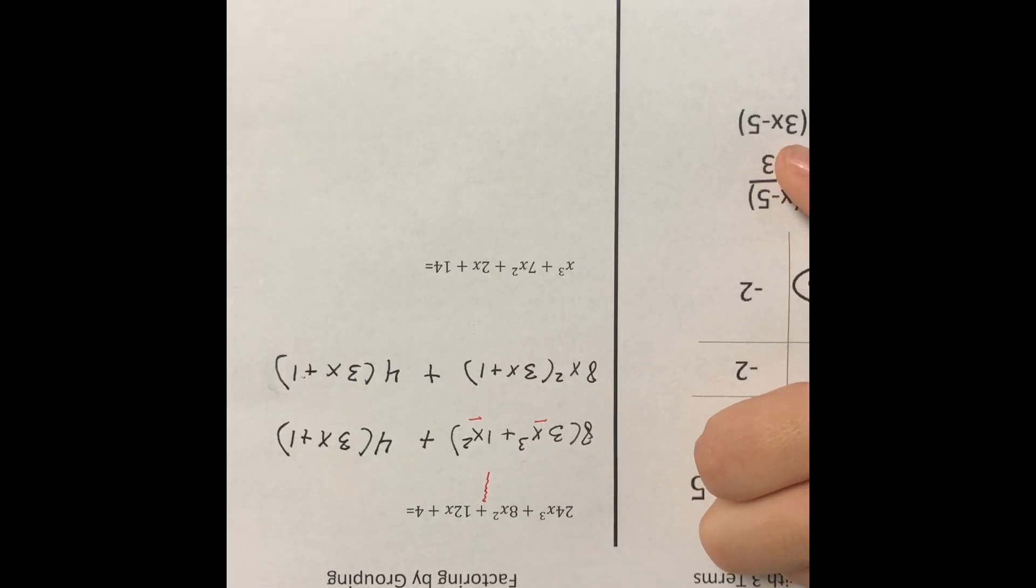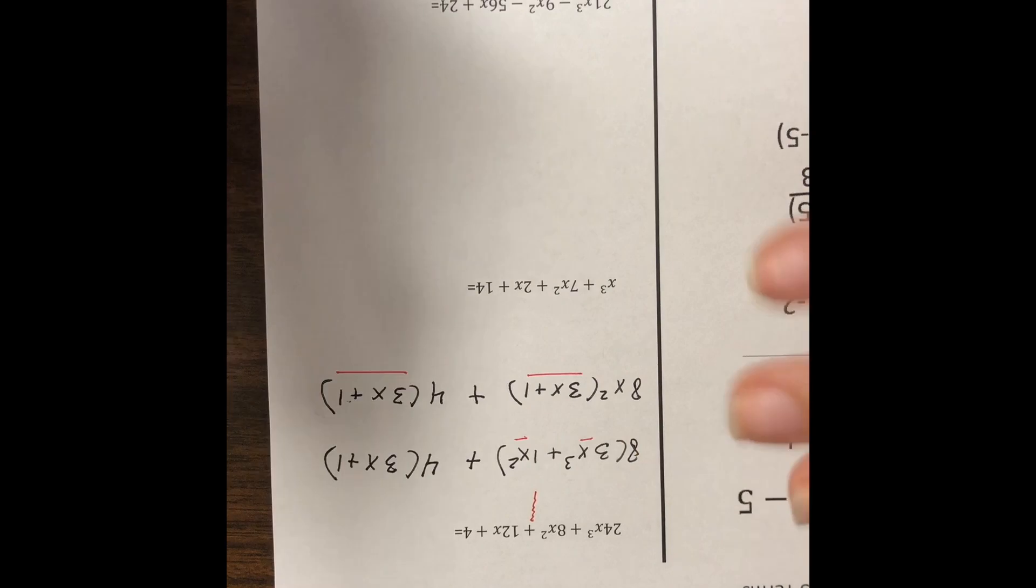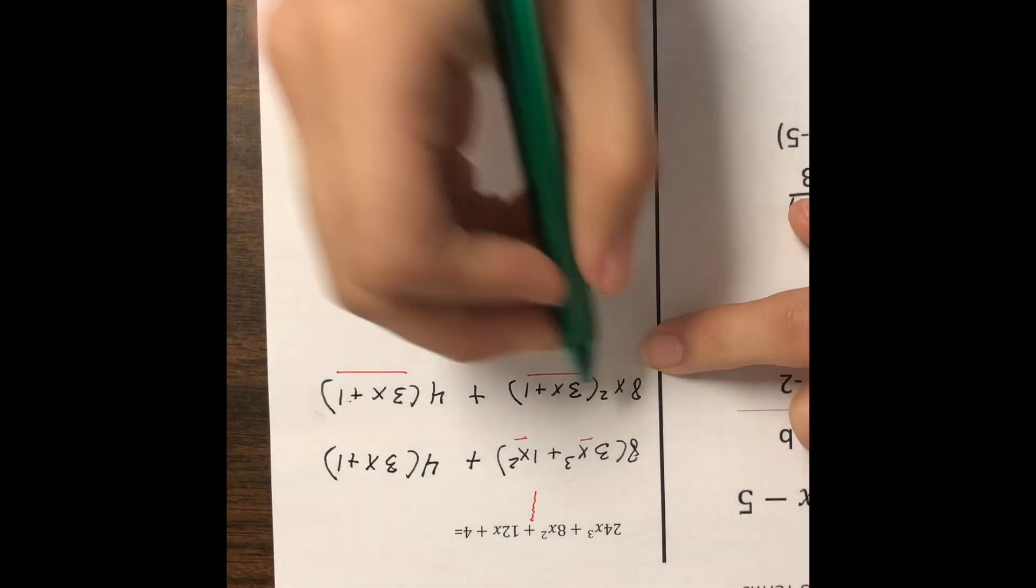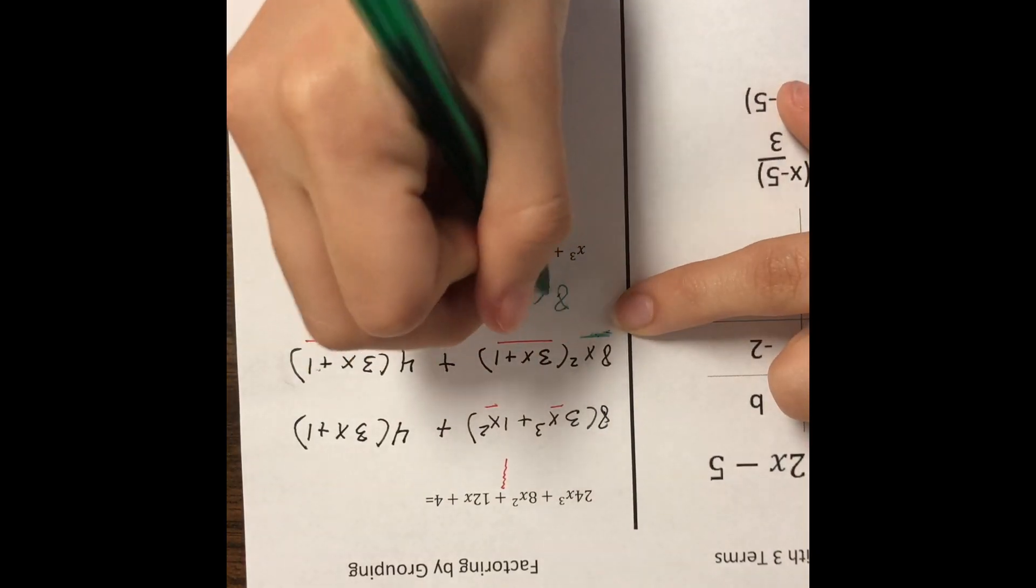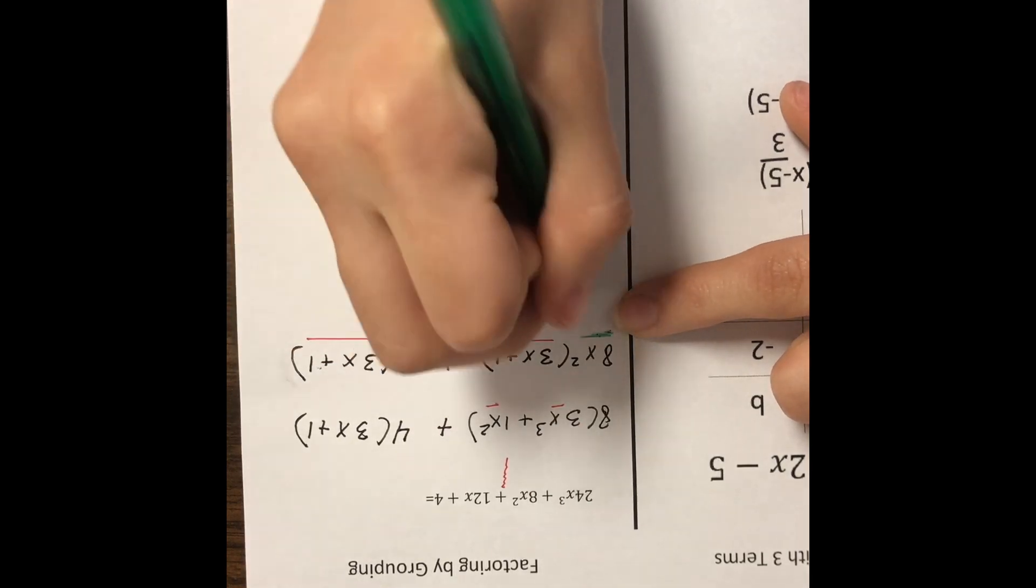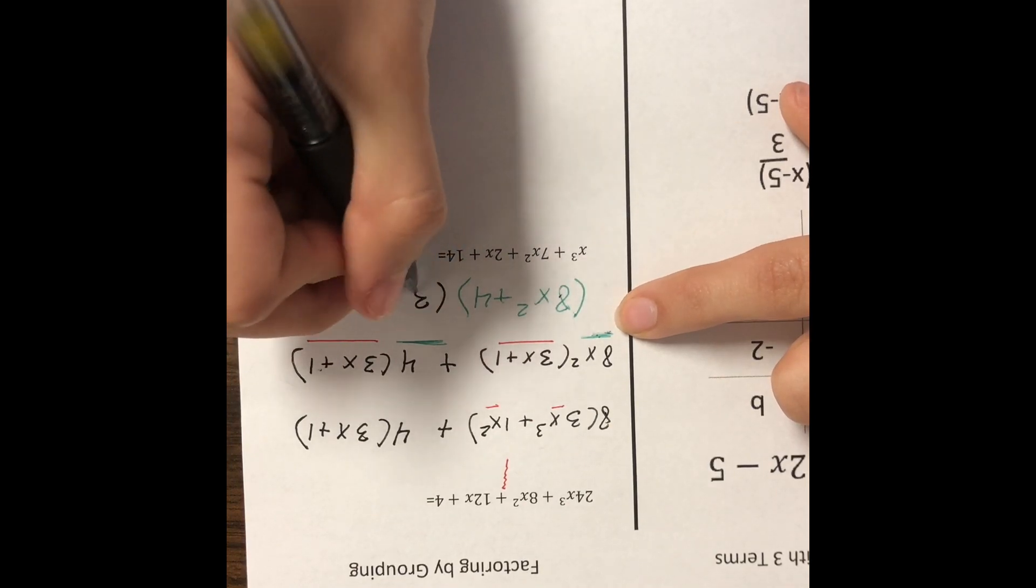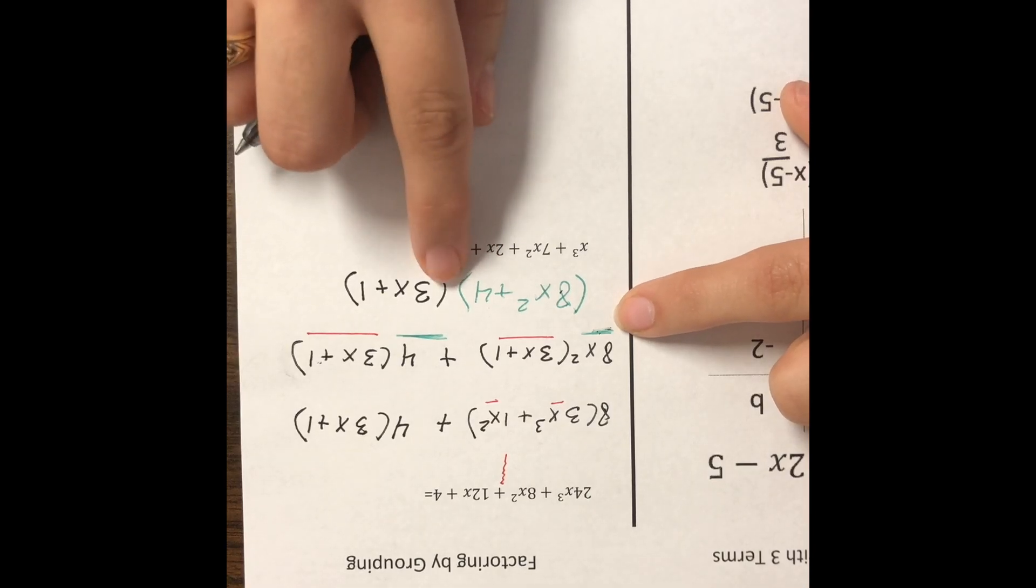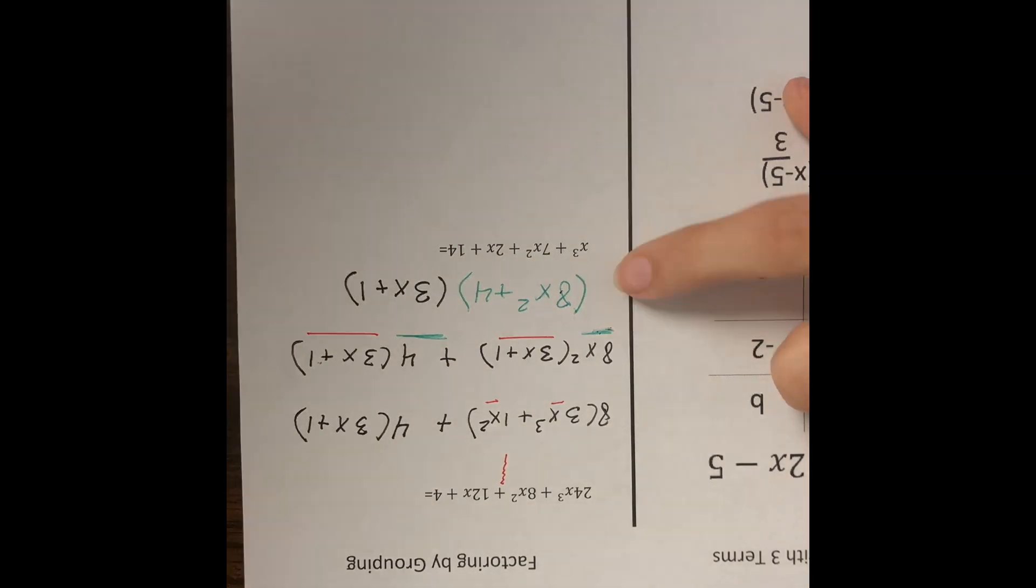Now, if you notice something, they are the same. That is going to always be the goal. So now that we know we did it correctly because they're both the same, what we're going to do is combine our outside ones as one. So that would be 8x squared plus 4. And we're going to write only once our ones that are the same. We're going to have it not adding each other. We already included the adding over here. And that's it. This is our answer.